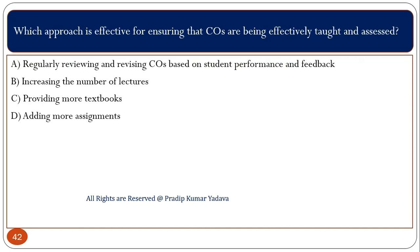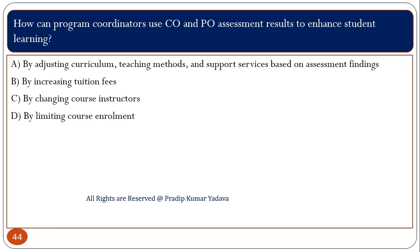Which approach is effective for ensuring that COs are being effectively taught and assessed? Regularly reviewing and revising COs based on student performance and feedback is a very effective approach. How can a program coordinator use CO and PO assessment results to enhance student learning? The program coordinator can enhance student learning by adjusting curriculum, teaching methods, and support services based on the assessment findings.